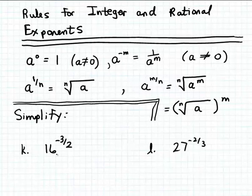So let's start here with example k where we want to simplify 16 to the minus 3 halves power. There's two things we have to worry about in simplifying this expression. First we have a fractional exponent, and furthermore that fractional exponent is a negative number.